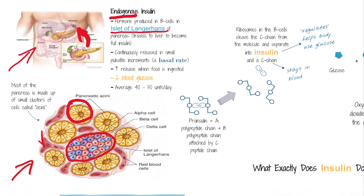What these islet cells do is release insulin and another hormone called glucagon. They release a few other things as well, and we'll talk about that as we go through, but right now we want to focus on insulin. Insulin is a hormone created in the beta cells inside of an islet of Langerhans. If you look at this picture, we also have alpha cells and delta cells, but for now we're just going to focus on these beta cells and what they do.